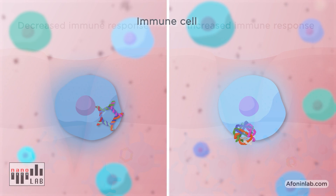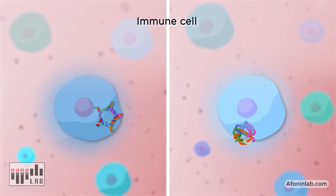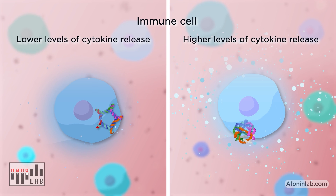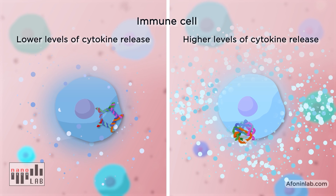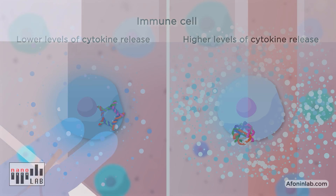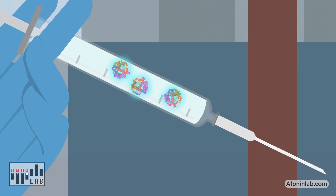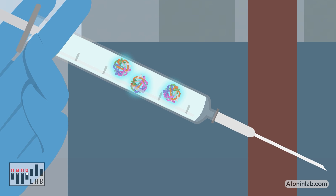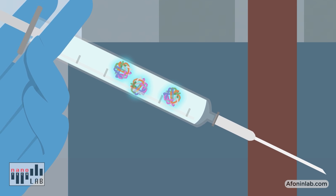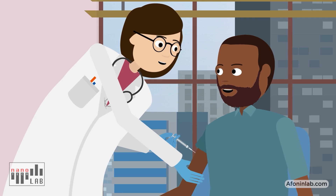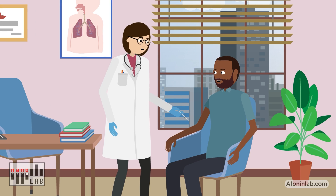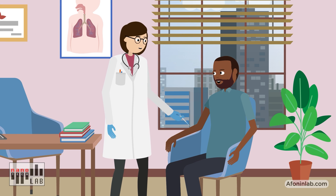For example, different NAMPs will stimulate varying amounts of production of interferons and pro-inflammatory cytokines by the immune cells. This can be used to control the magnitude of immune response, to improve and personalise safety and efficacy of vaccines, immunotherapies and drug delivery.